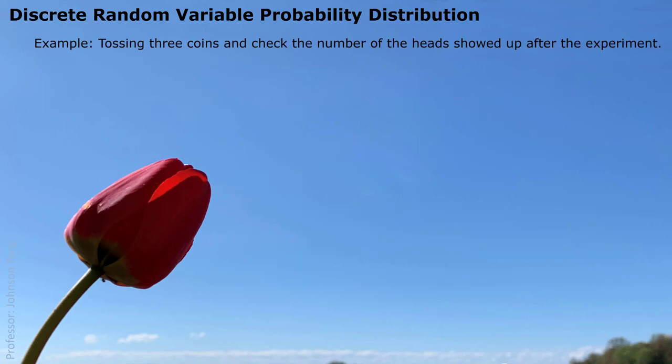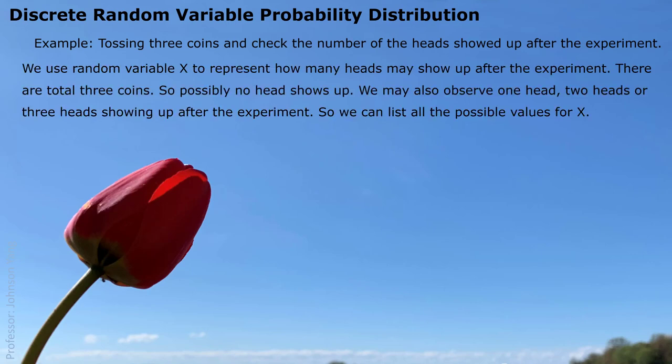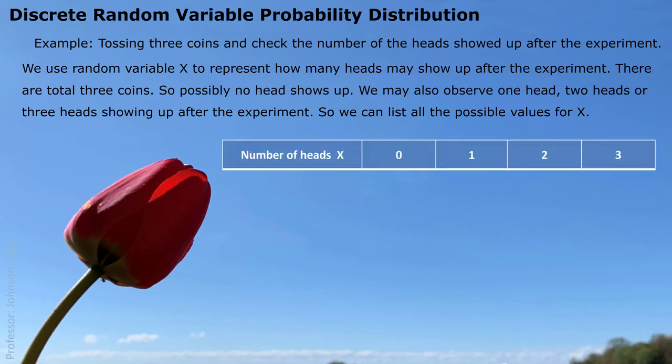Let's look at a typical example. We do an experiment tossing 3 coins and check the number of heads that showed up after the experiment. We use a random variable x to represent how many heads may show up. There are a total of 3 coins, so possibly no head shows up, we may observe one head, two heads, or three heads. So we can list all possible values for x: zero, one, two, three.